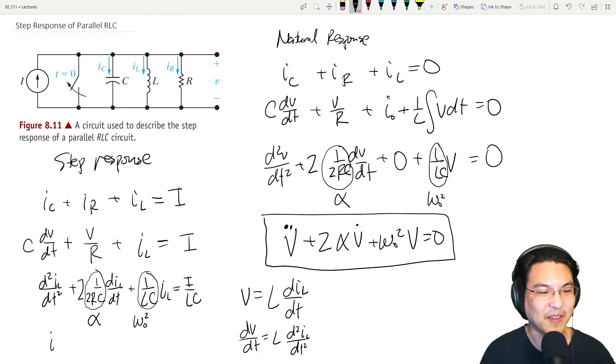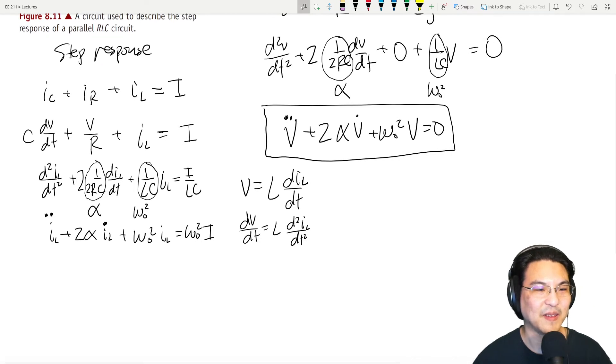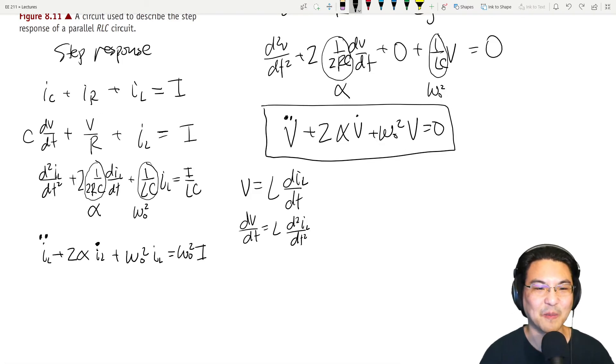What do we have? We have I double dot, plus two alpha I dot, plus omega_0 squared I equals omega_0 squared I_L. So now take a look at what we have here. It is a second order ODE, kind of like this one. But this time, this side is not zero. So this is a non-homogeneous second order ODE. Because of this term right here being non-zero. And what's the difference? Just this is letter V. This is letter I. Otherwise, it's the exact same form of a second order ODE. The only difference is, this one is non-homogeneous.